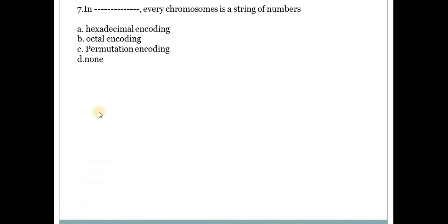Next question is in dash every chromosome is a string of numbers. Answer is C, permutation encoding. Chromosomes are represented in the form of string and string contains numbers. Numbers include digits 0 and 1.